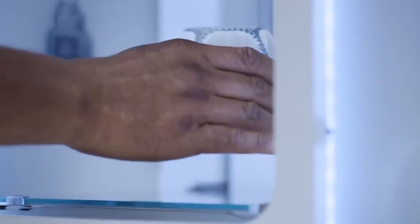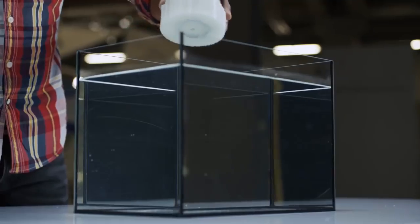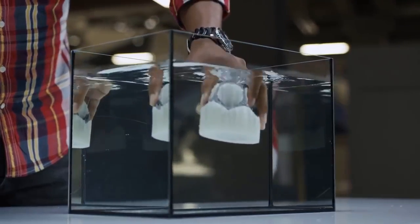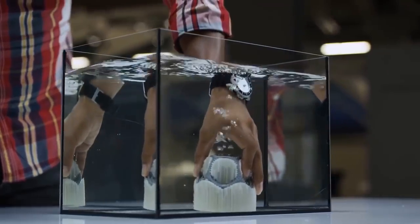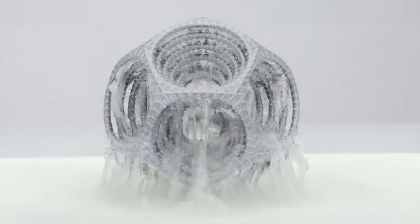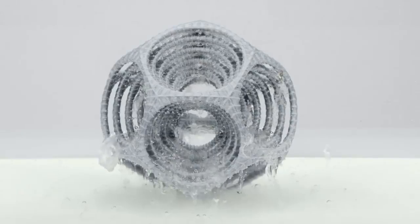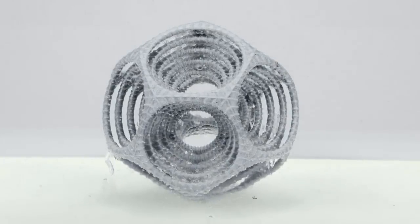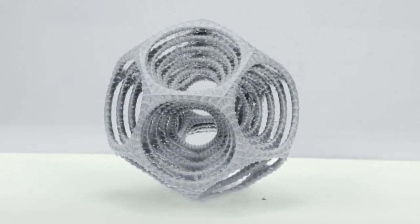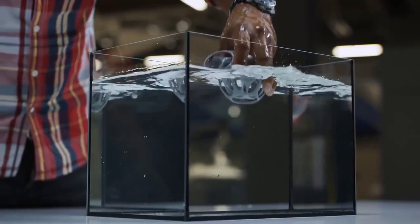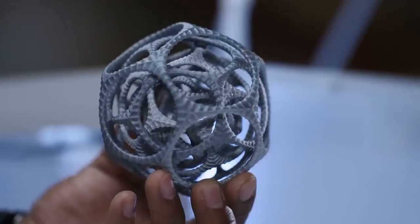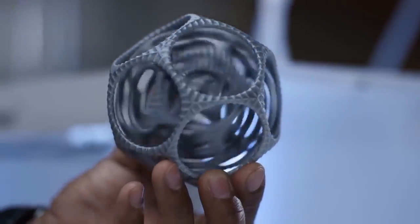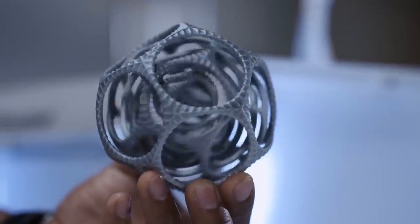Overall, the Ultimaker 3 is a formidable machine. It supports a lot of materials, has flexible, easy-to-use software, and the dual extrusion system capably lives up to the quality of its single extrusion predecessors. Build quality is solid and performance and reliability are excellent. However, dual extrusion on the Ultimaker 3 comes at the cost of speed—think double, triple, or even quadruple the print times.